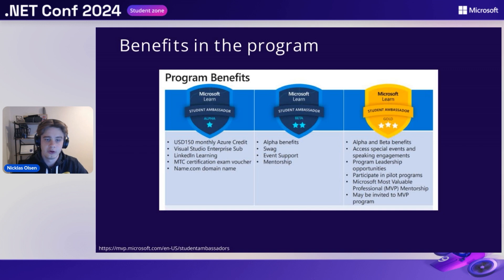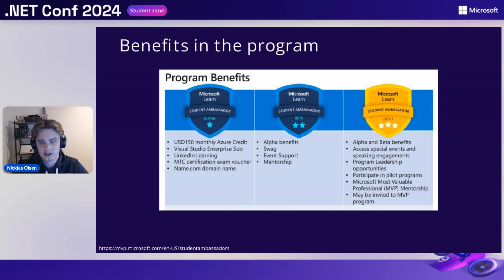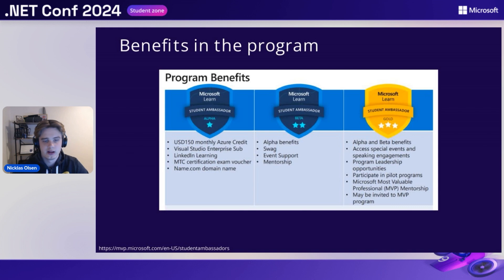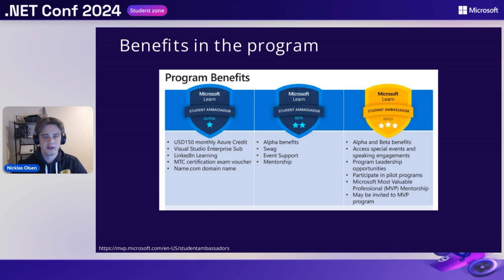Once you've been a beta or been in the program for more than a year, you can actually self-nominate yourself or you can get nominated by a Microsoft employee or existing gold student ambassadors to get to the gold milestone. If you get accepted, you will receive all the alpha and beta benefits, access to special events and speaking engagements, program leadership opportunities, the ability to participate in pilot programs, and very close mentorship with MVPs as well. And lastly, you might be invited to the MVP program. But again, it isn't all about the benefits — it's all about the difference you make in your local community and the experience you gather together with other students.